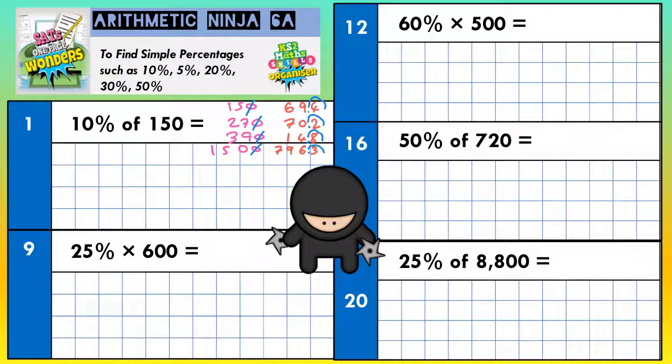Now then, let's try some of these questions. Question number one: 10% of 150. There is a zero on the end, so we can just knock that zero off. Final answer: 15.